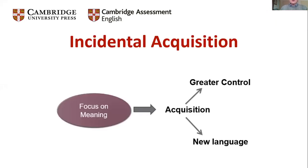Incidental acquisition involves two things: a focus on meaning, and acquisition in two senses — you can acquire new language from doing a task, or you can acquire greater control over language you've already partially learned. I want to emphasize that because learning a language is not just a question of learning new language; it's a question of increasing control of a language partially acquired.